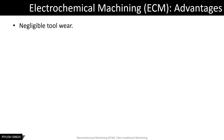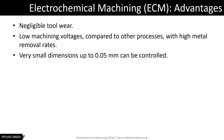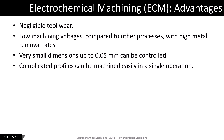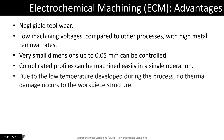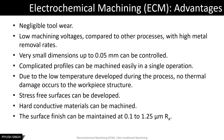Advantages of the ECM process include: no tool wear since there is no contact between the tool and the workpiece; machining at low voltages with high metal removal rates; control of very small dimensions up to 0.05 mm; ability to machine complicated profiles in a single operation; no thermal damage to the workpiece due to low temperatures developed; easy machining of hard conductive materials; and surface finish maintained at 0.1 to 1.25 micrometer Ra. The labour requirements are also low.